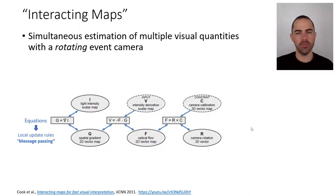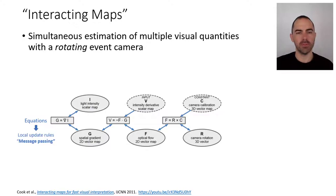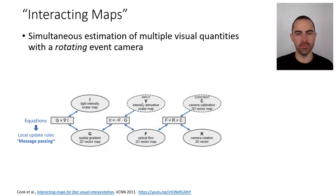This is probably the first one, from 2011 — you can see the reference at the bottom by Kukutal — from the people at the Institute of Neuroinformatics in Zurich, three years after the DVS was commercially available. It's called Interactive Maps or Interacting Visual Maps, and it's a method for simultaneous estimation of multiple quantities — not just image intensity — in the case of a rotating event camera. It's not meant to be a feed-forward network but rather a network that reverberates and converges into a stable state.